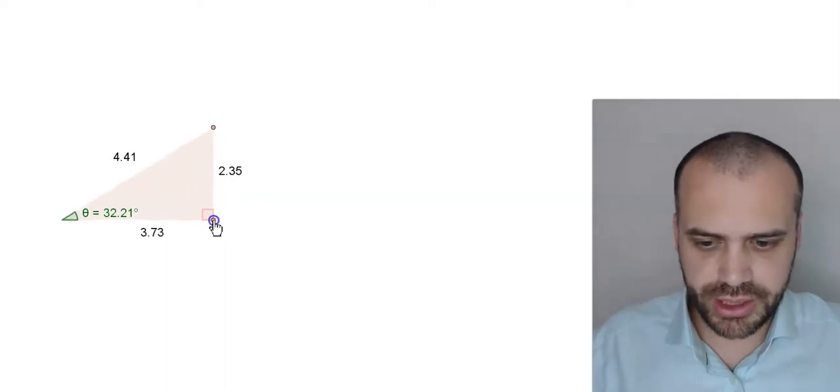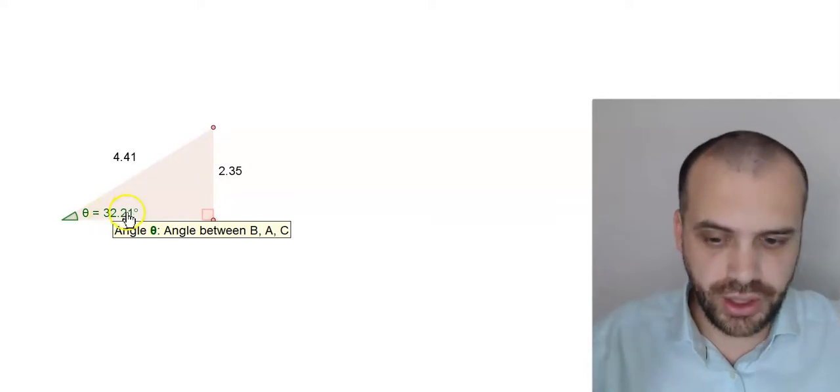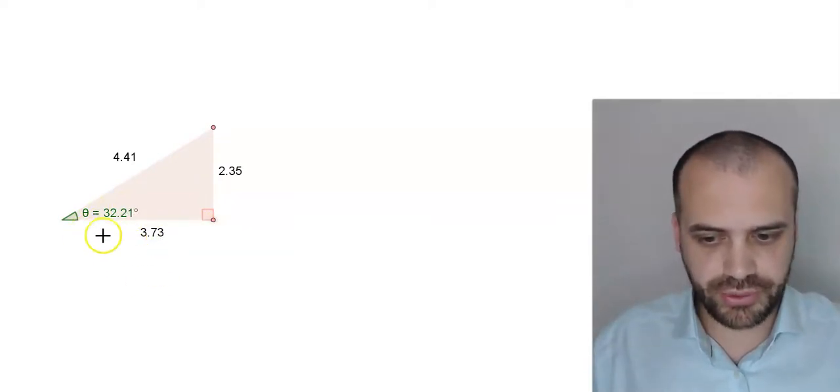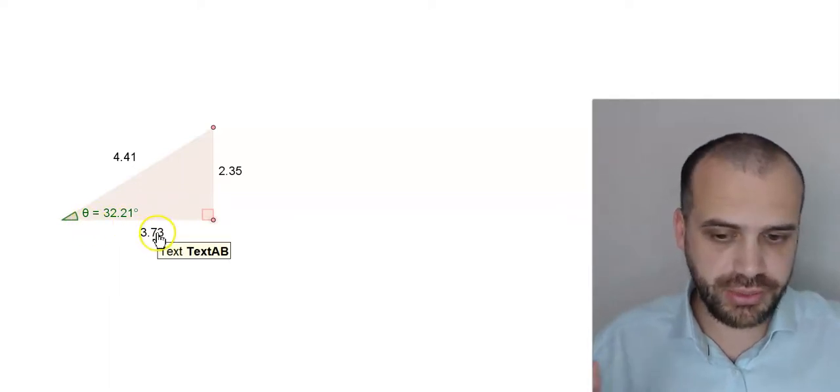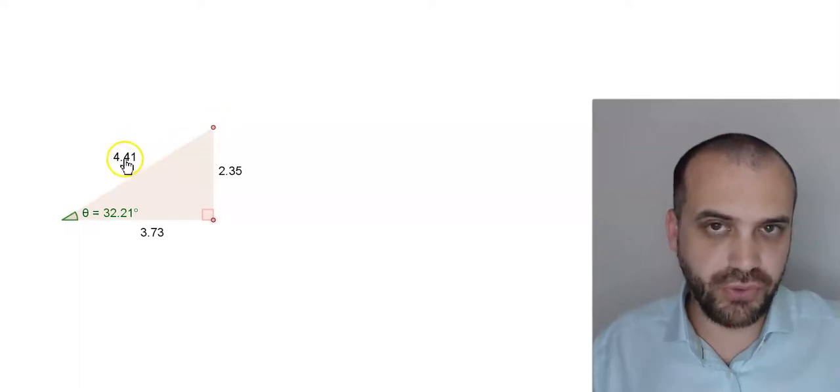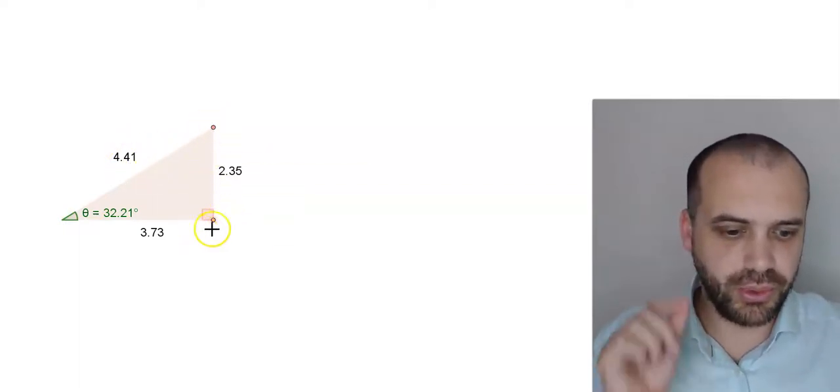Alright so let's make it like a decent-ish size and the angle is 32.21 approximately, and you can see that these side lengths are 3.73. This is the adjacent side because it's next to the angle of interest. This is the hypotenuse which is 4.41 and this is the opposite side which is 2.35.